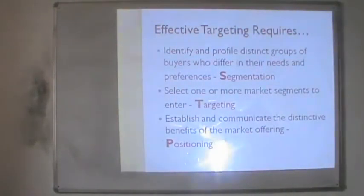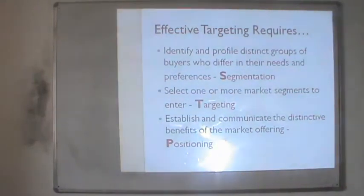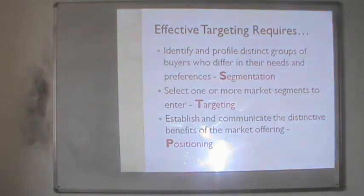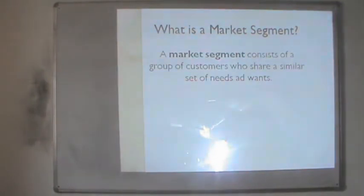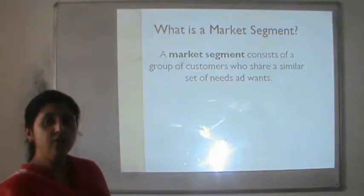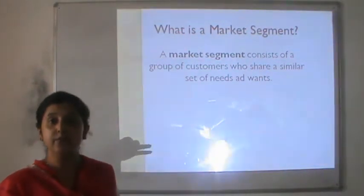The three important activities of marketing strategy are segmentation, targeting and positioning — referred to as STP. Segmentation involves identifying and profiling groups of buyers who differ in their needs and preferences. Targeting means selecting one or more market segments to enter. Positioning is establishing and communicating the distinctive benefits of the market offering to the target audiences. A market segment consists of a group of customers who share a similar set of needs and wants.